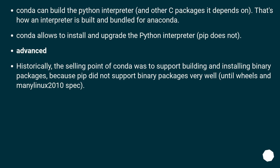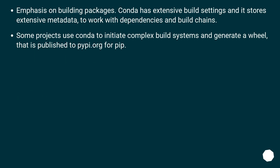Conda allows installing and upgrading the Python interpreter — pip does not. Historically, the selling point of conda was to support building and installing binary packages, because pip did not support binary packages very well until wheels and the manylinux spec. Conda has extensive build settings and stores extensive metadata to work with dependencies and build chains. Some projects use conda to initiate complex build systems and generate a wheel that is published to pypi.org for pip.